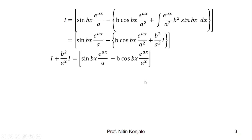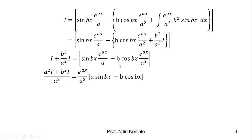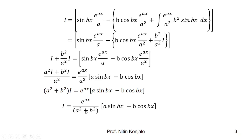Now simplifying the left-hand side as well as the right-hand side: on the left side we have (a squared plus b squared)·I over a squared, and taking out the common factor e raised to ax upon a squared on the right, we have (a·sin(bx) minus b·cos(bx)) inside the bracket. The a squared cancels, and taking a squared plus b squared to the right-hand side gives I is equal to e raised to ax upon (a squared plus b squared) times (a·sin(bx) minus b·cos(bx)). So the integration of e raised to ax times sin(bx) dx is e raised to ax upon (a squared plus b squared) times (a·sin(bx) minus b·cos(bx)).